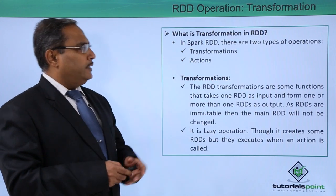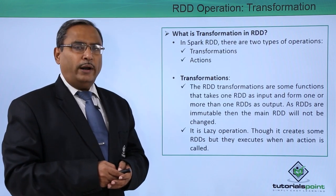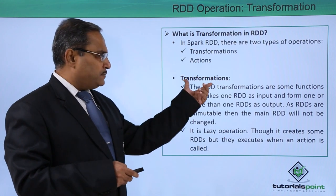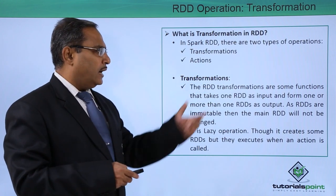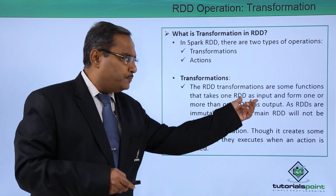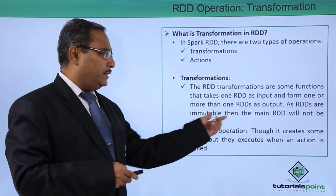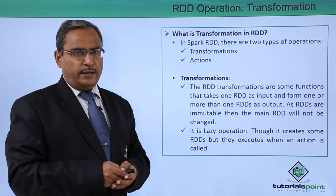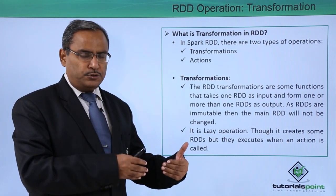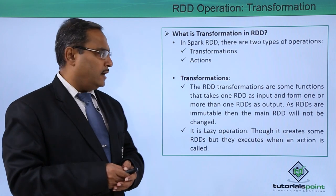In Spark RDD, there are two types of operations: one is the transformations, another one is the actions. In case of transformations, the RDD transformations are some functions that take one RDD as input and from one or more than one RDDs will be obtained as output. So, one RDD will be taken as input and one or more RDDs will be obtained as the output.